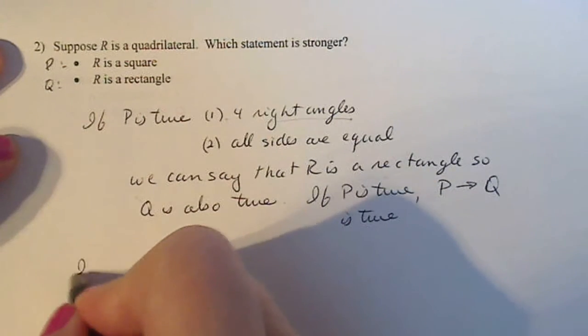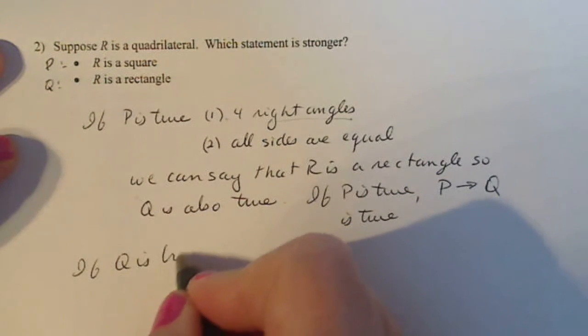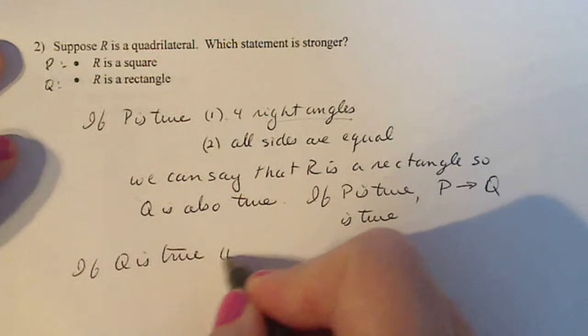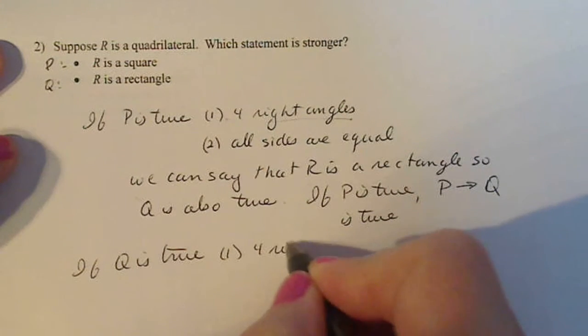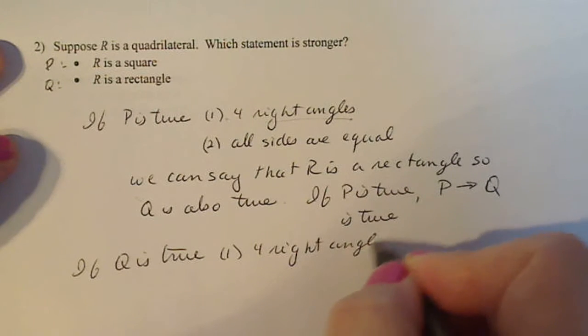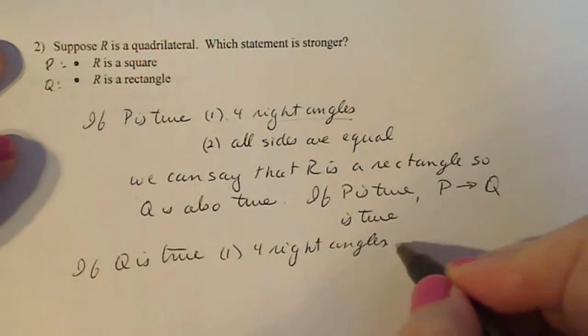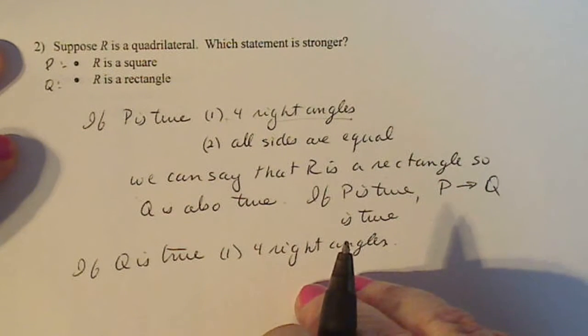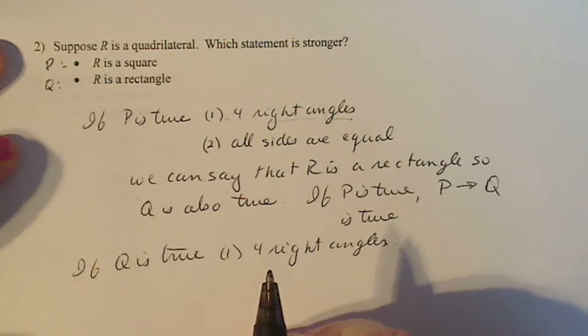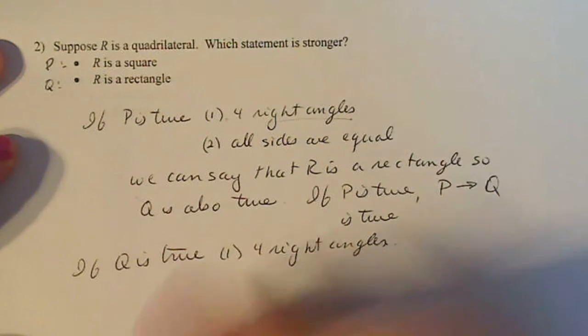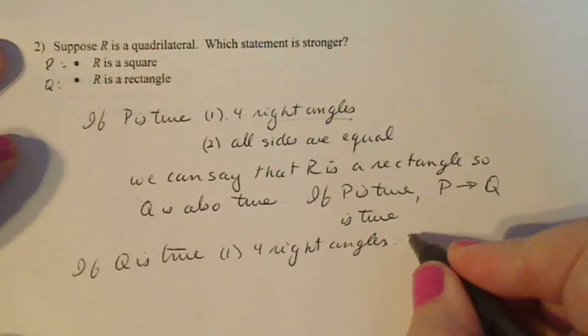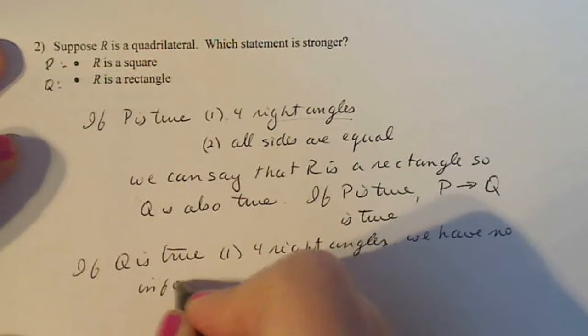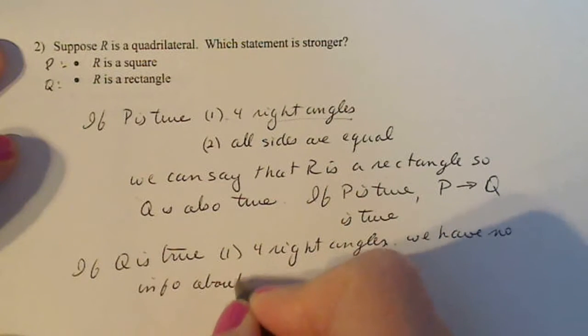Okay. Now let's try the other one. If Q is true, that means R, the quadrilateral is a rectangle. All that means is it has four right angles. What do we know about the lengths of the sides though? We have nothing. We just know it has four right angles. The sides could be all of equal length, but we don't know that they're all equal length. So like the previous problem, we have no info about the lengths of the sides.